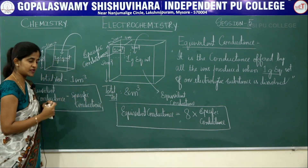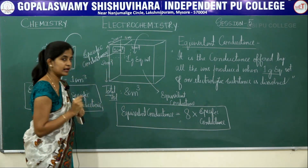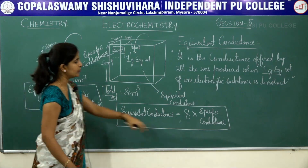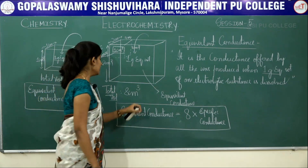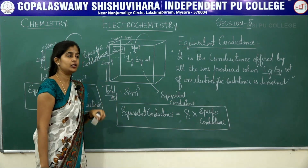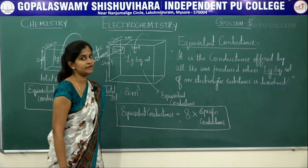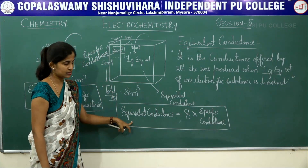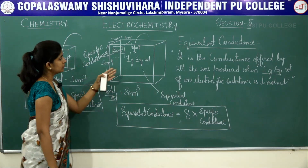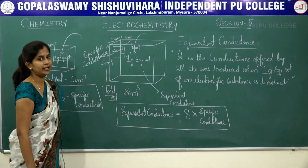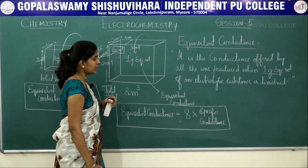From both illustrations we can observe that equivalent conductance cannot be determined without the help of specific conductance. We need a relationship that relates equivalent conductance with specific conductance. The equivalent conductance is purely depending upon the volume as well as the concentration of the electrolyte taken.